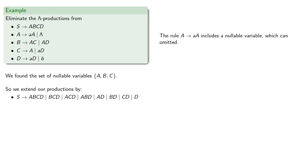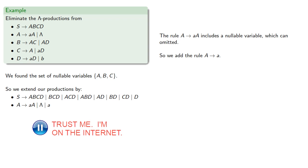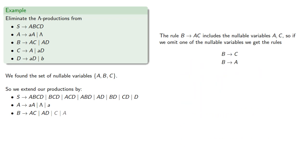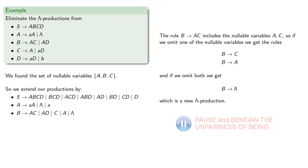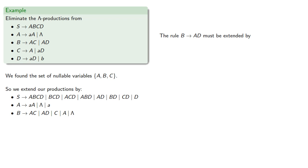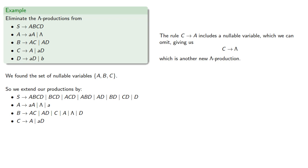The rule A produces AA includes a nullable variable which can be omitted, so we add A produces A. The rule B produces AC includes nullable variables A and C; omitting one gives new rules, and omitting both gives B produces lambda — which is a new lambda production, but since B was already in the set of nullable variables, we already had this. The rule B produces AD is extended by including B produces D. The rule C produces A includes a nullable variable, giving C produces lambda — another new lambda production.